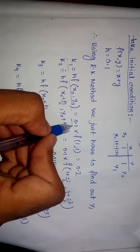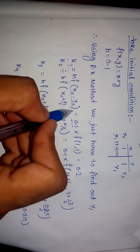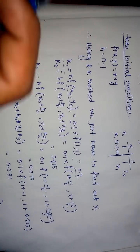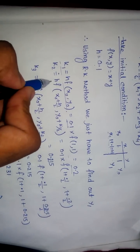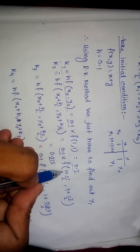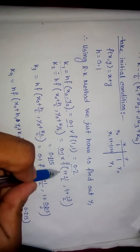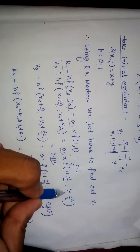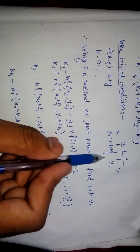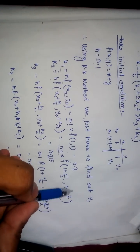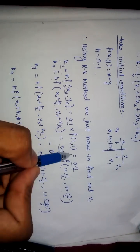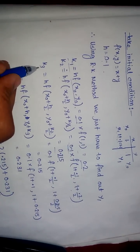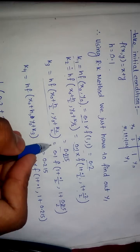We have h = 0.1 and f(x₀, y₀) where x₀ = 1, y₀ = 1, so k1 = 0.1 × f(1, 1) = 0.2. For k2, h is 0.1 and the function is evaluated at x₀ + h/2 = 1 + 0.05 = 1.05 and y₀ + k1/2 = 1 + 0.1 = 1.1. After computing, we then find k3 using the same formula as before with the previously computed values.